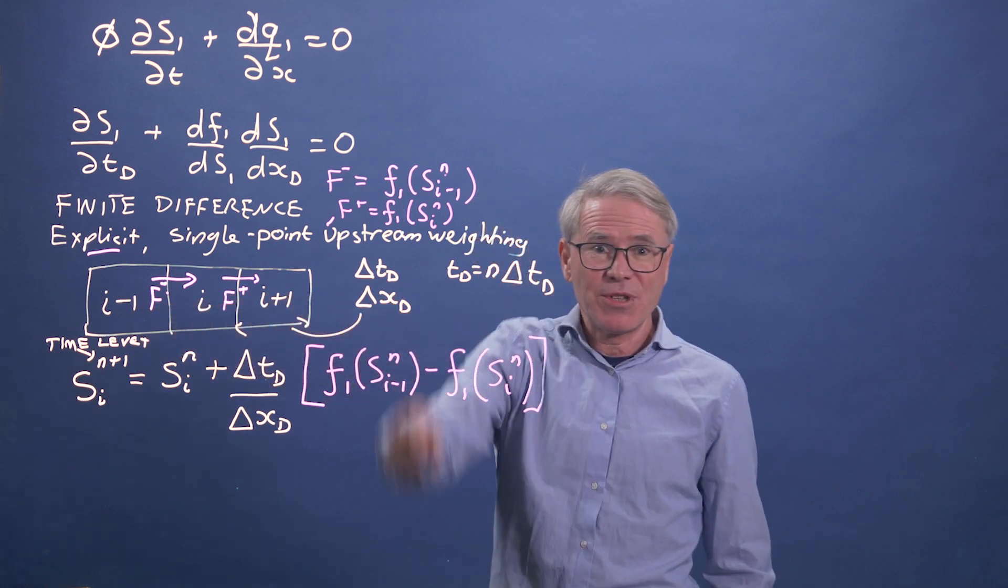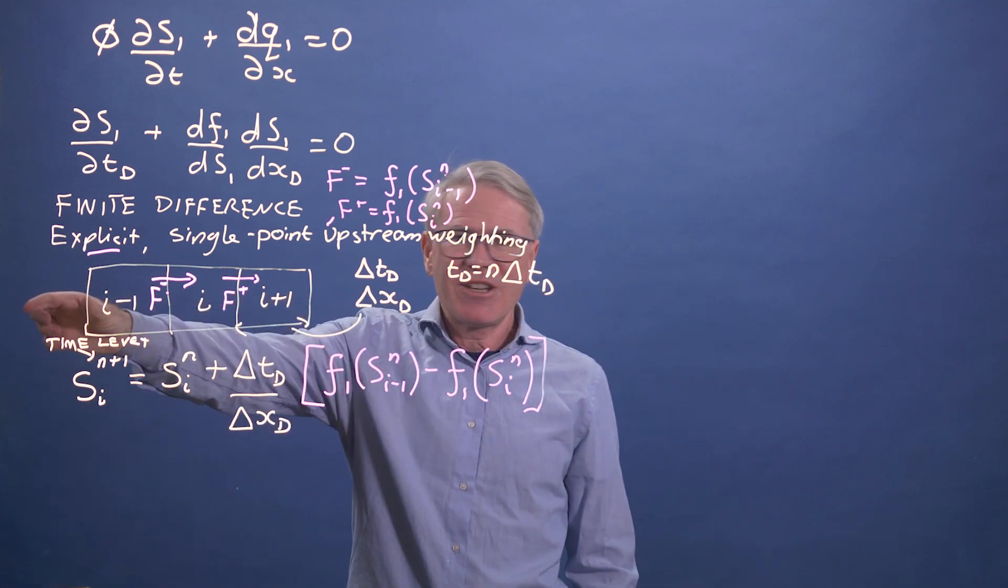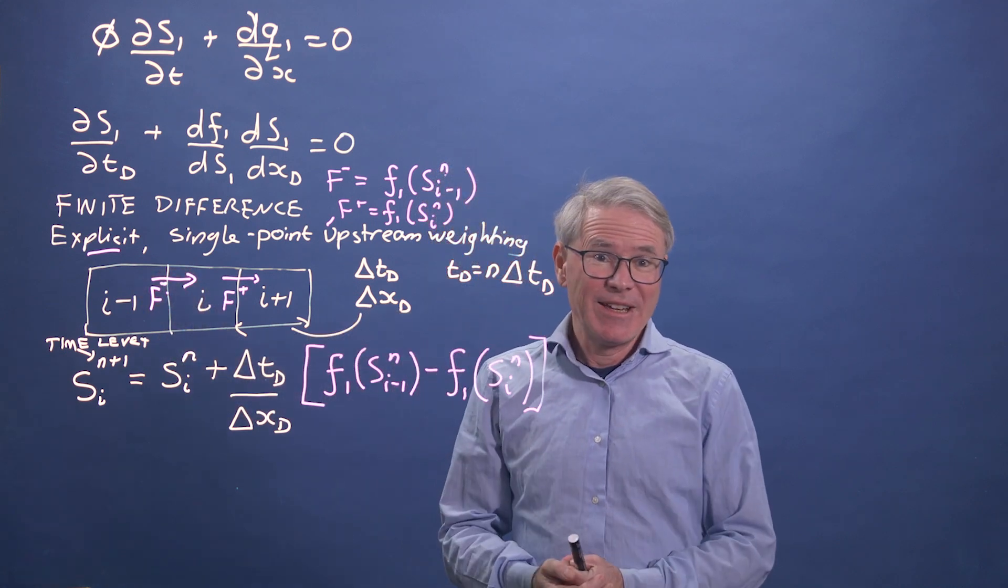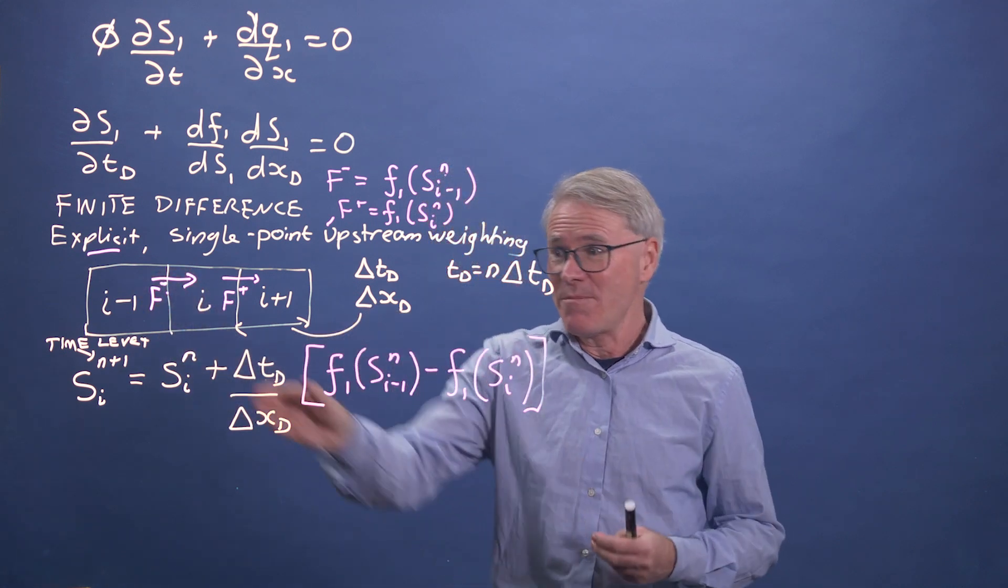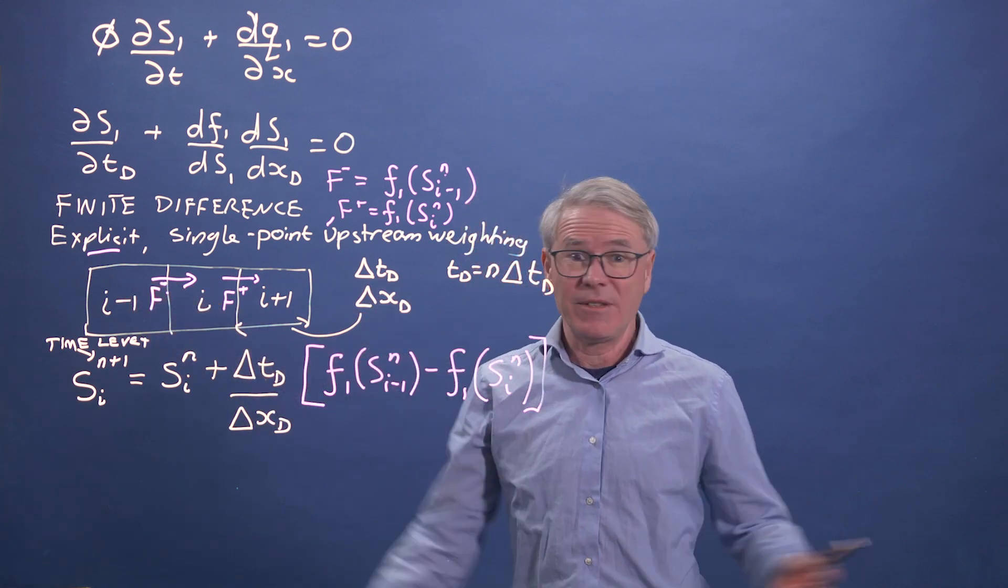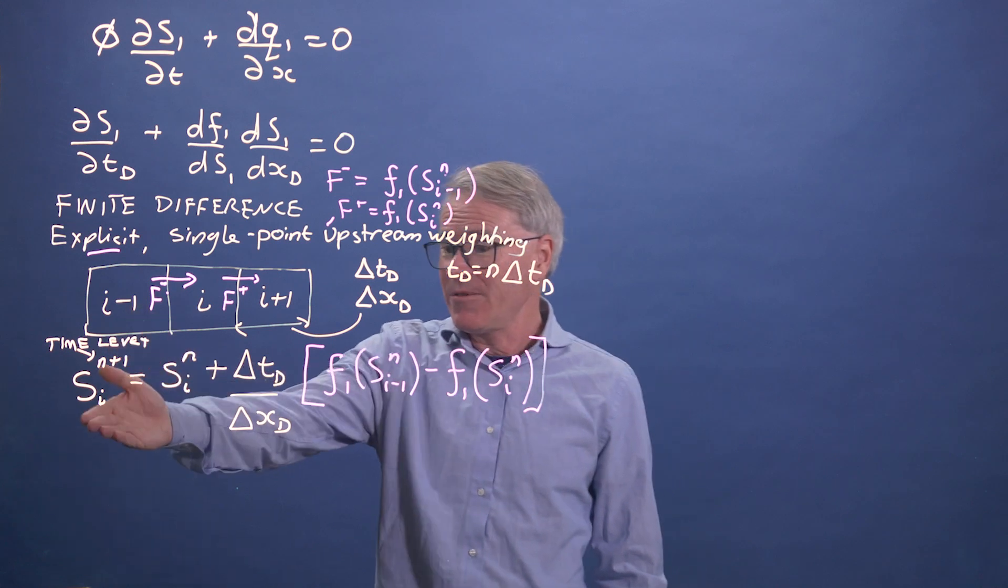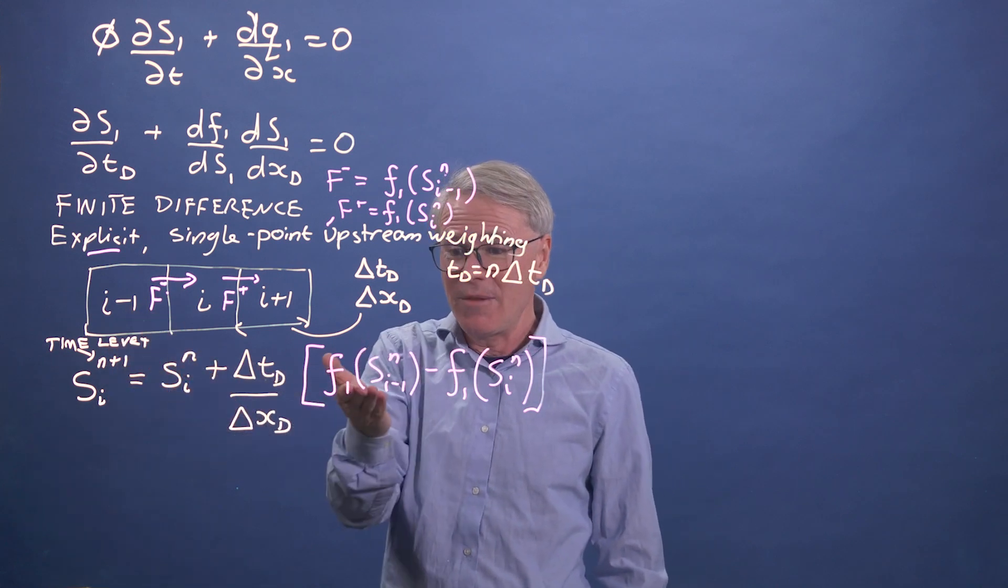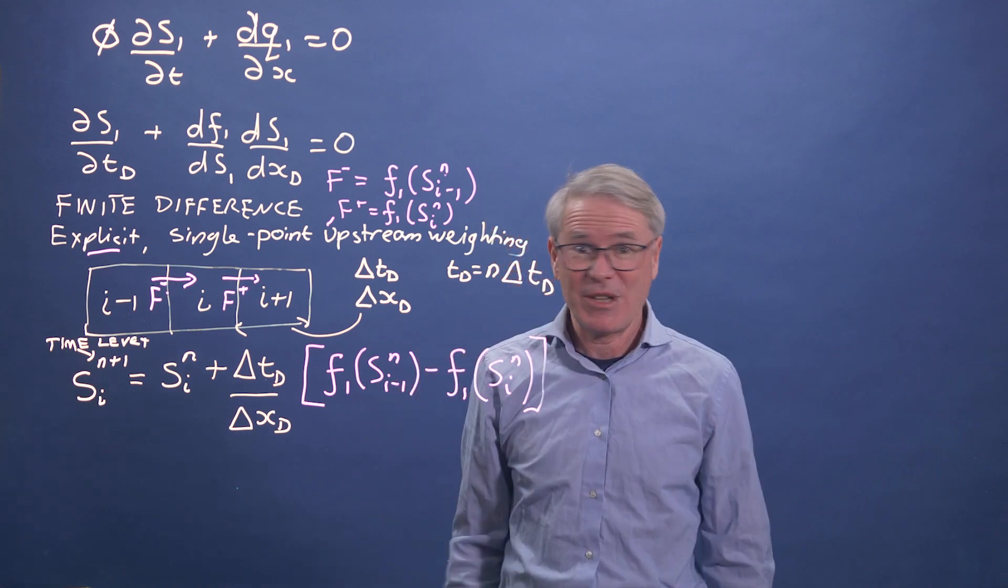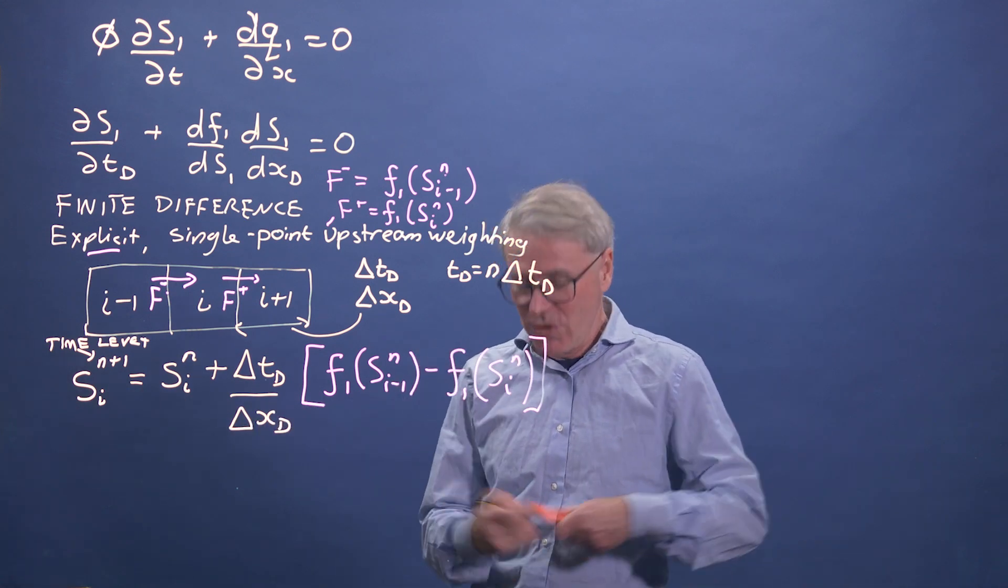everything is at the initial saturation at time t equals naught. I can update the first grid block to have my one minus the residual saturation, so maximum saturation. And then I can simply update using these dimensionless variables, because I can update for the new time level. I know what is in the old time level. These are known functions of the saturation of the previous time.